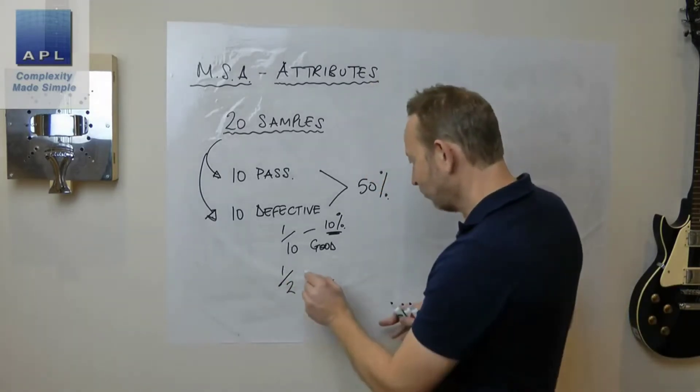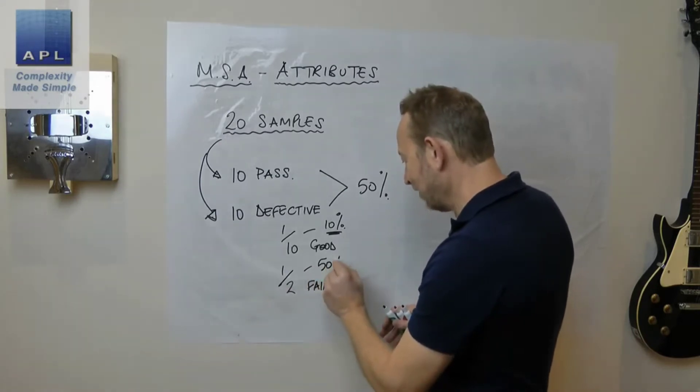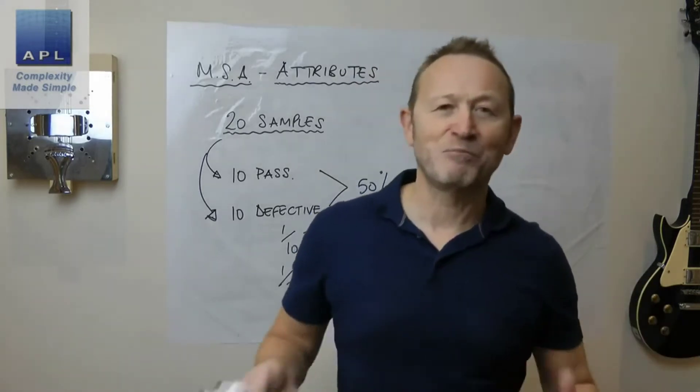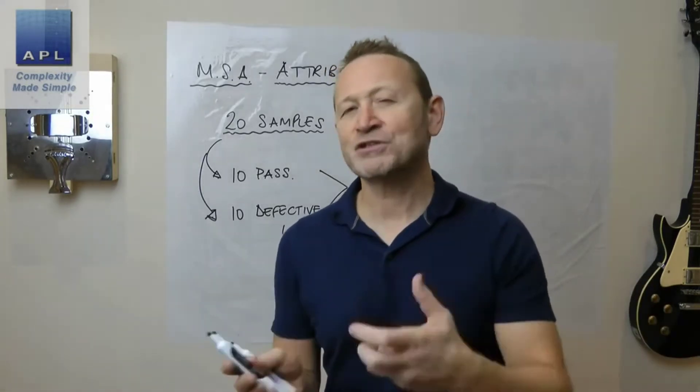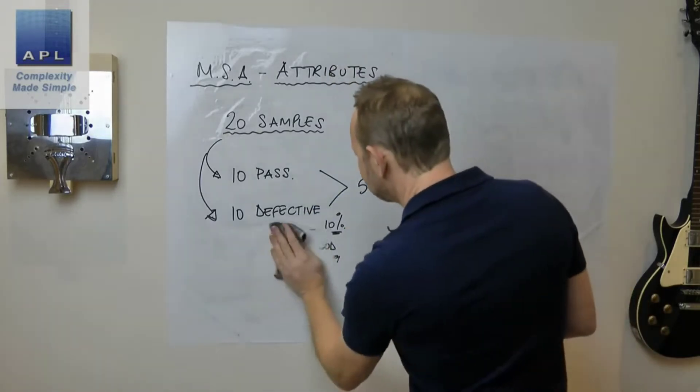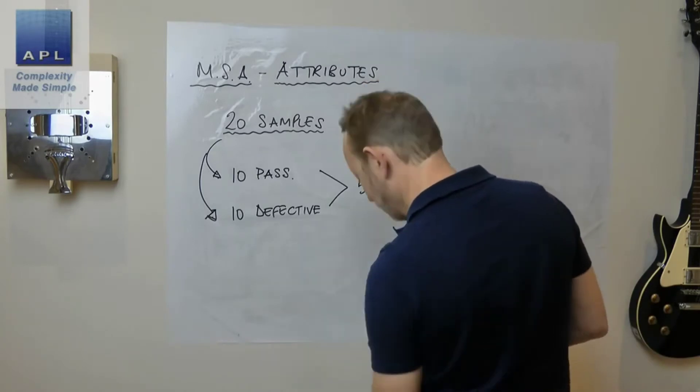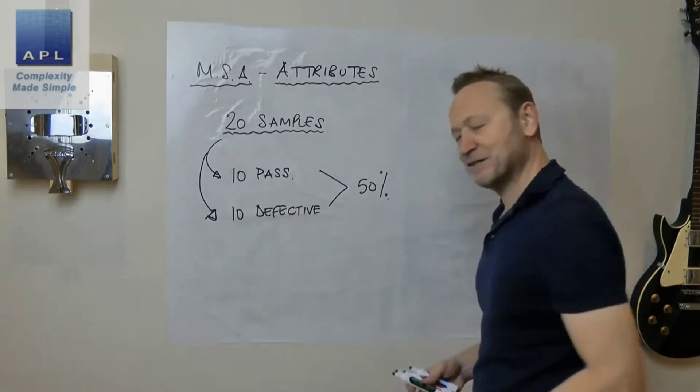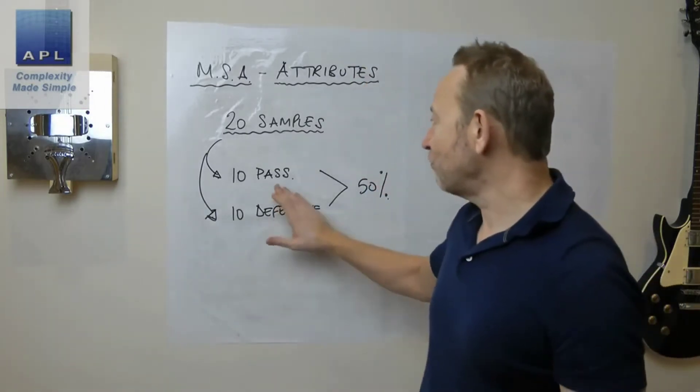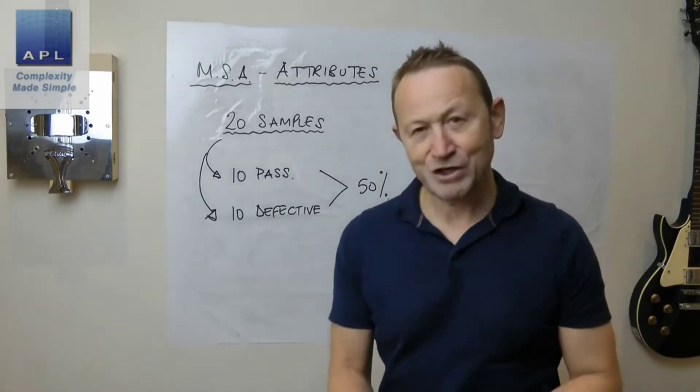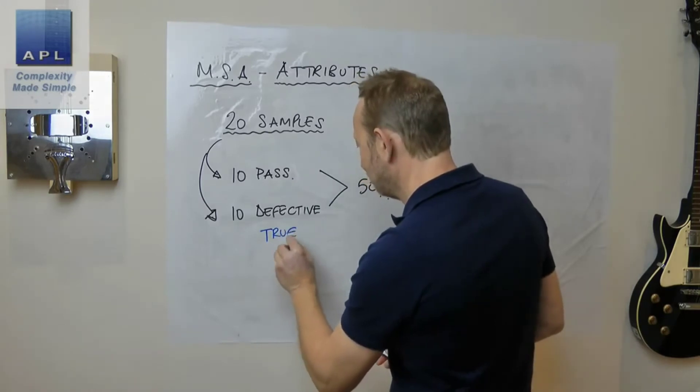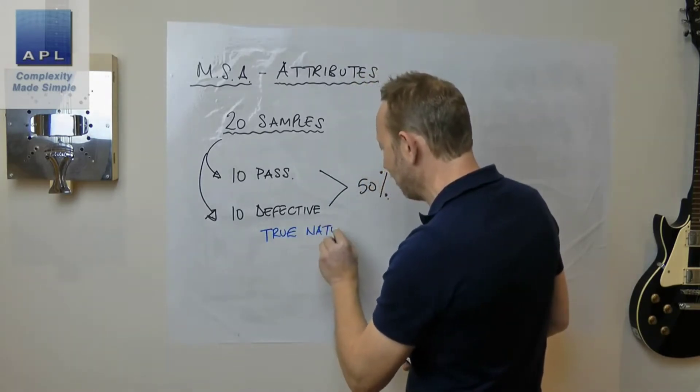Now what you're getting is a bias through the statistics. In order not to create a bias in the statistics, we're going to make sure that we have 10 that pass and 10 that are defective. What this also means is that someone has to decide the true nature, so some expert has decided the true nature of these samples.